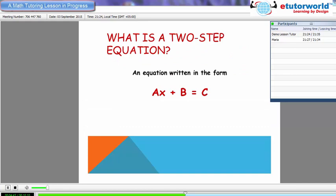Okay, so basically try to understand what a two-step equation is. An equation in the form ax plus b equals c can be termed as a two-step equation. For example, 2x plus 5 equals 11. This is a two-step equation. So we'll learn the steps involved and see how we can solve a two-step equation, okay?